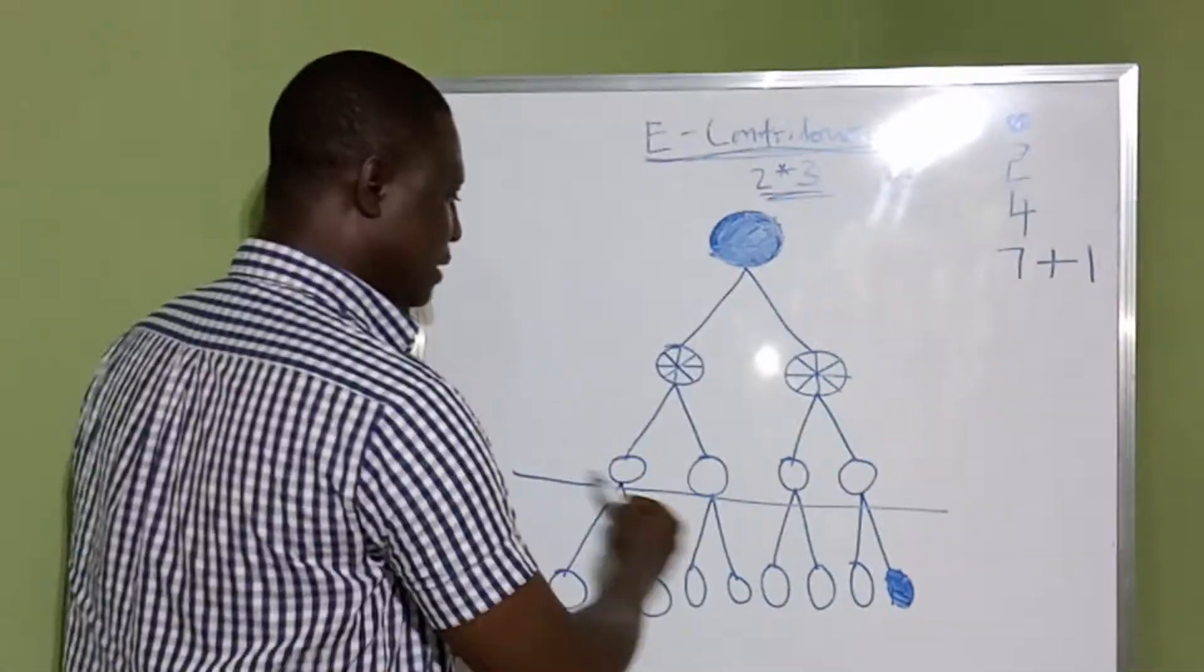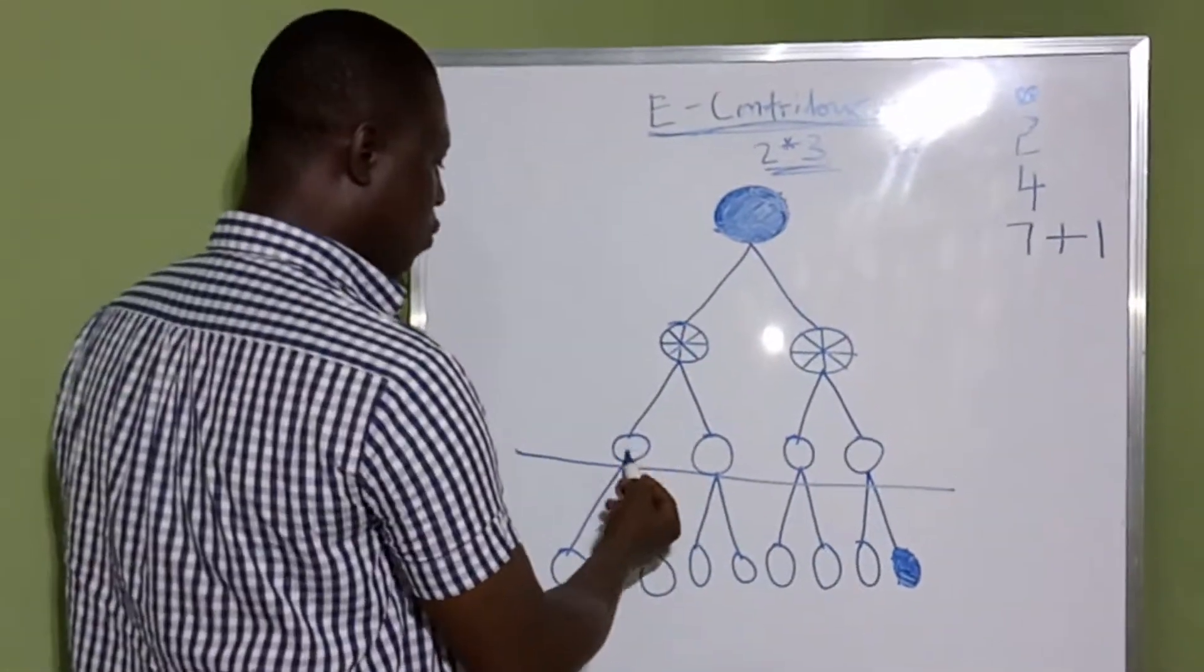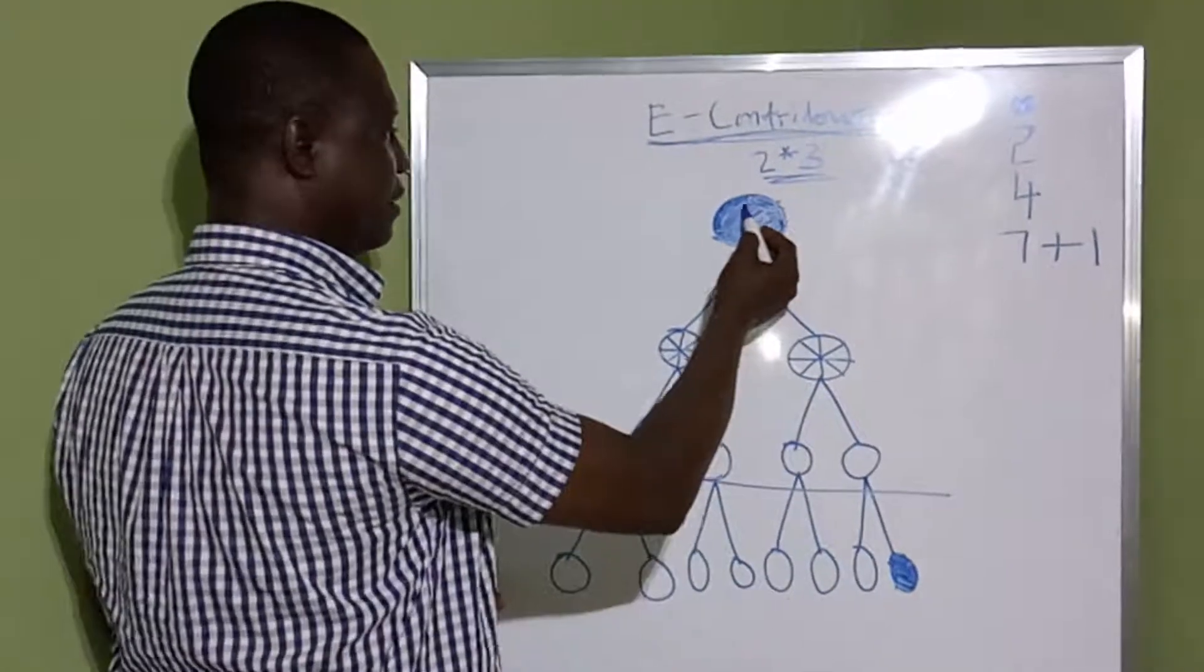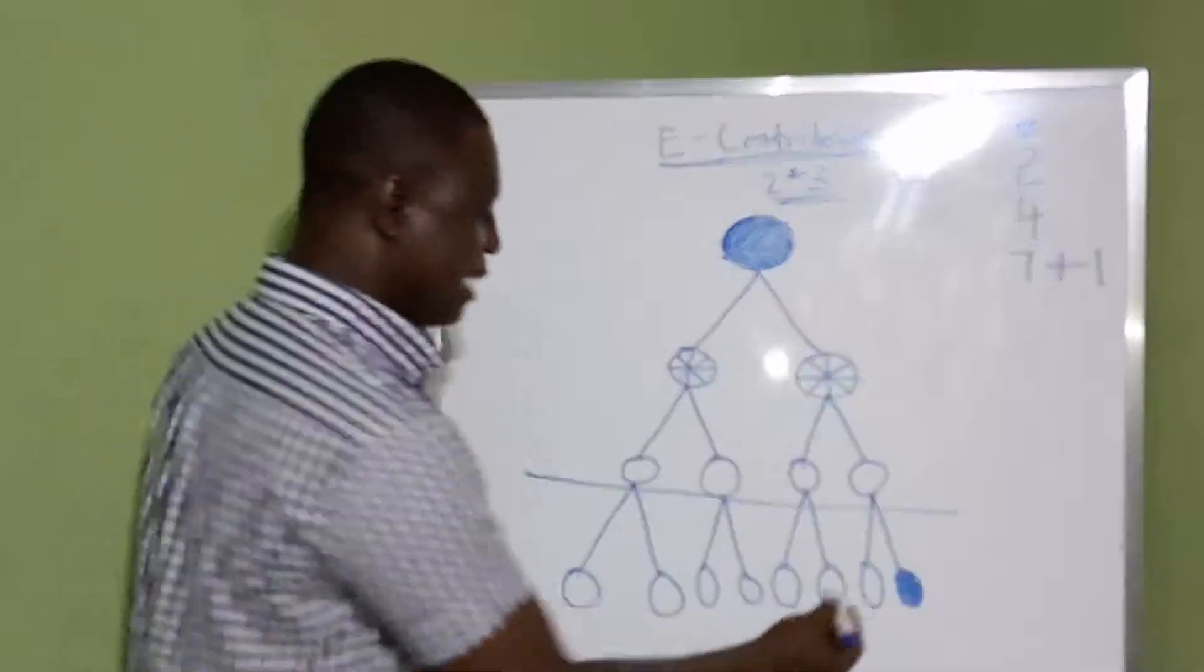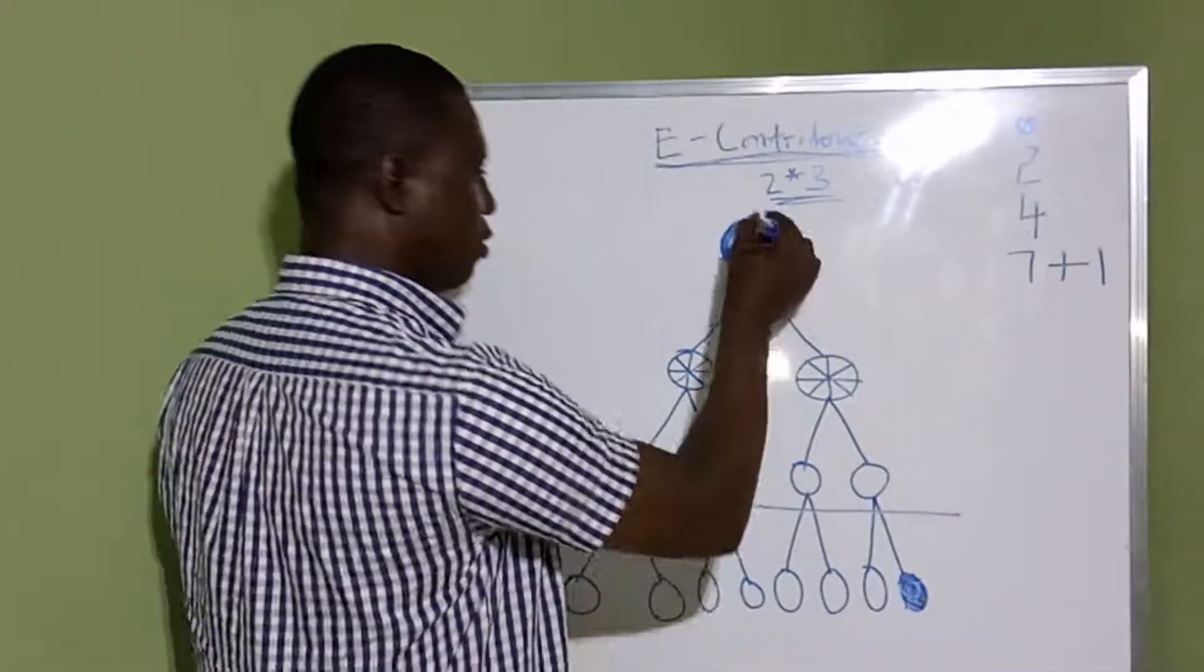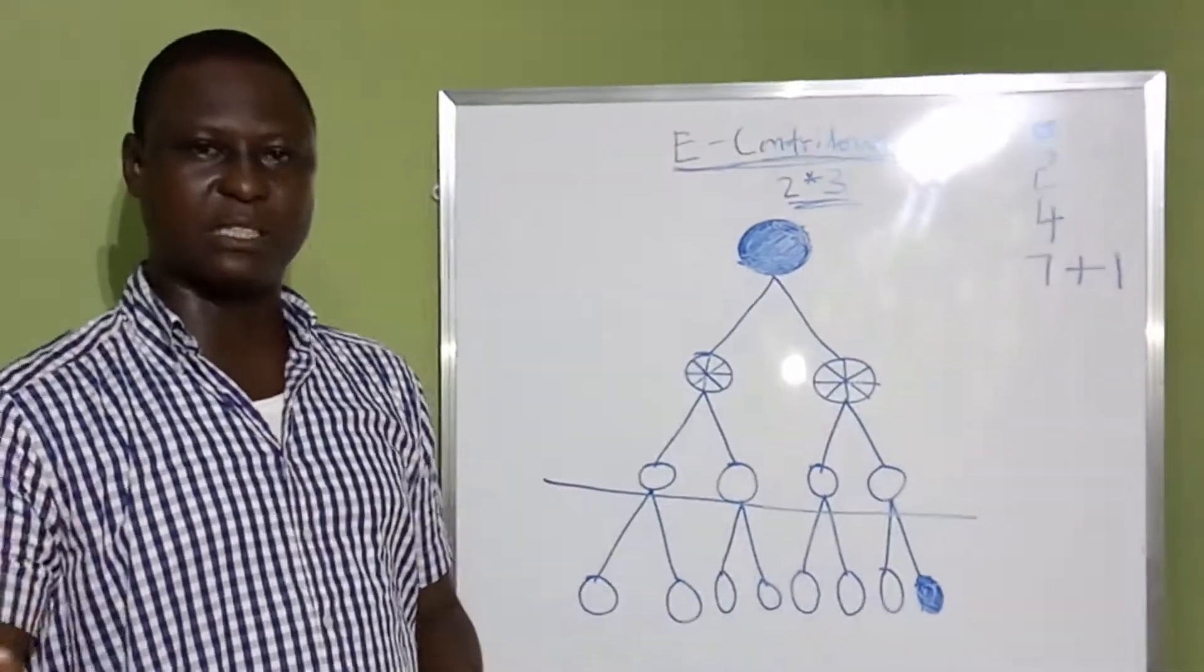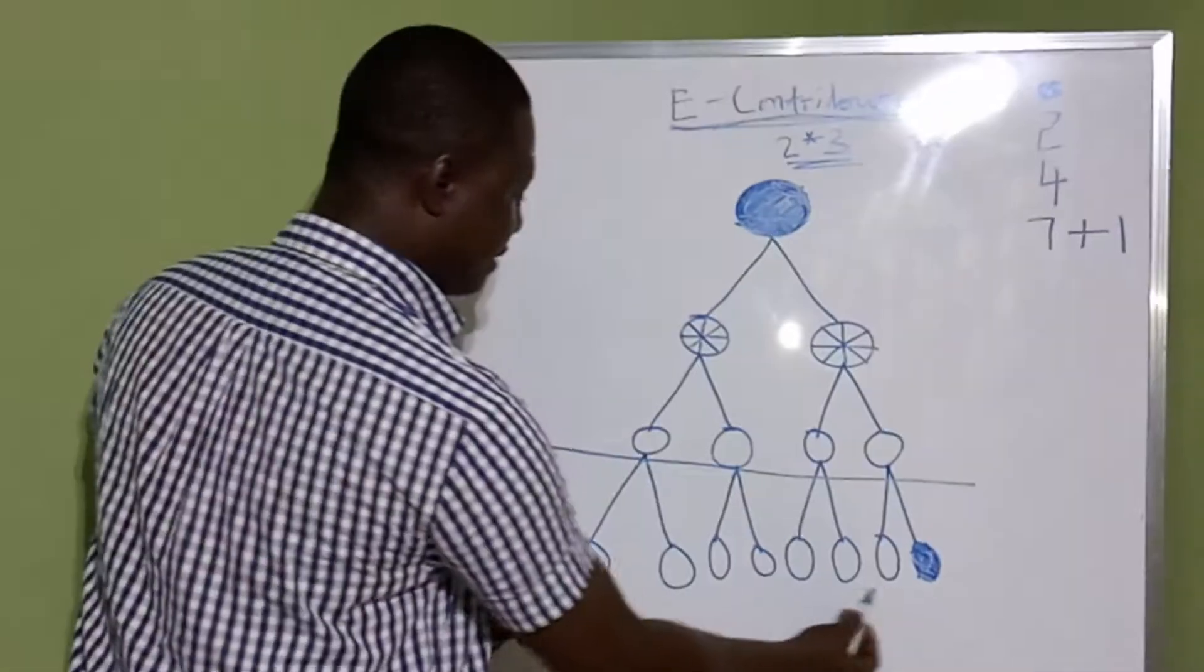The system will always create somebody for you. That means you will be having one, two, three, four, five, six, seven to look for—seven people. And you can see the cycle is being colored the way this cycle is. What does it really mean? Whenever you have this seven, this person automatically joins here.